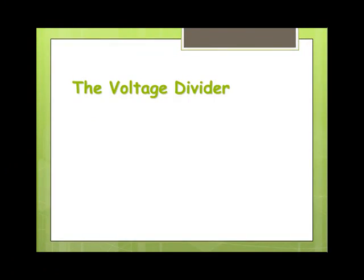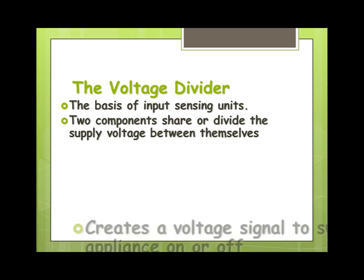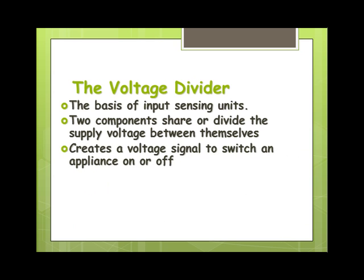So the voltage divider — firstly, what is it? It's the basis of virtually all input sensing units that are used in control electronics. Basically, two components share or divide, hence the name, the supply voltage between themselves, and in doing so they establish a voltage signal which will be used to switch an appliance on or off.